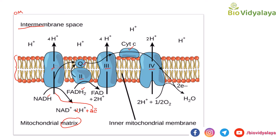First, NADH is oxidized to form NAD⁺, 2H⁺, and 2 electrons. These 2 electrons go to Complex 1, which undergoes oxidation-reduction reactions and releases some energy. That energy is used to pump 4 protons from the matrix to the intermembrane space. Then the electrons move to coenzyme Q, the mobile electron carrier. Similarly, FADH2 is oxidized to produce FAD, 2H⁺, and 2 electrons.